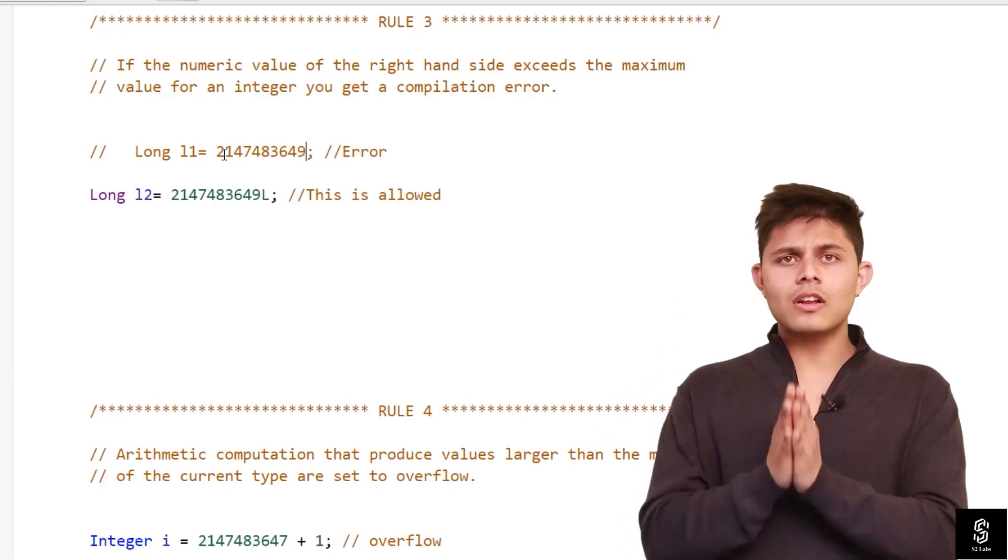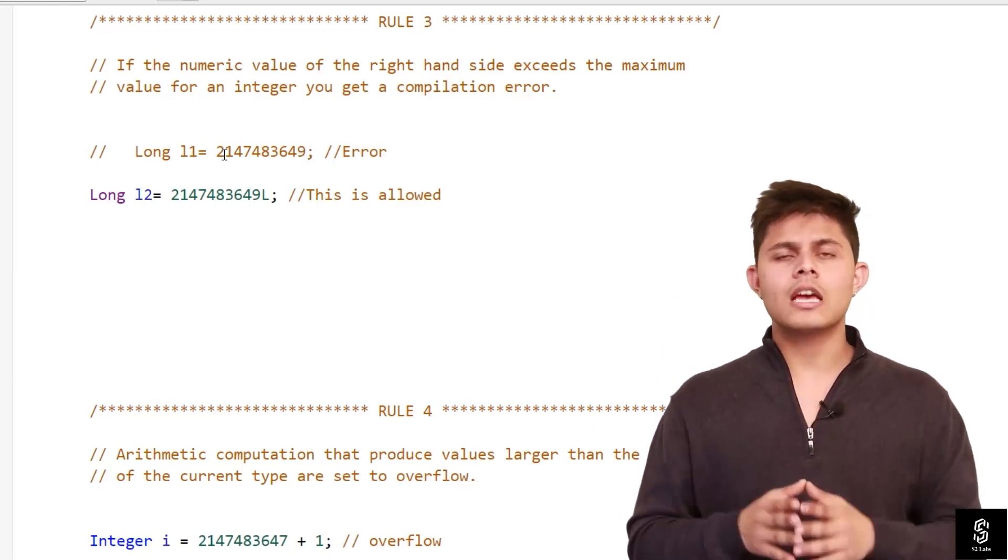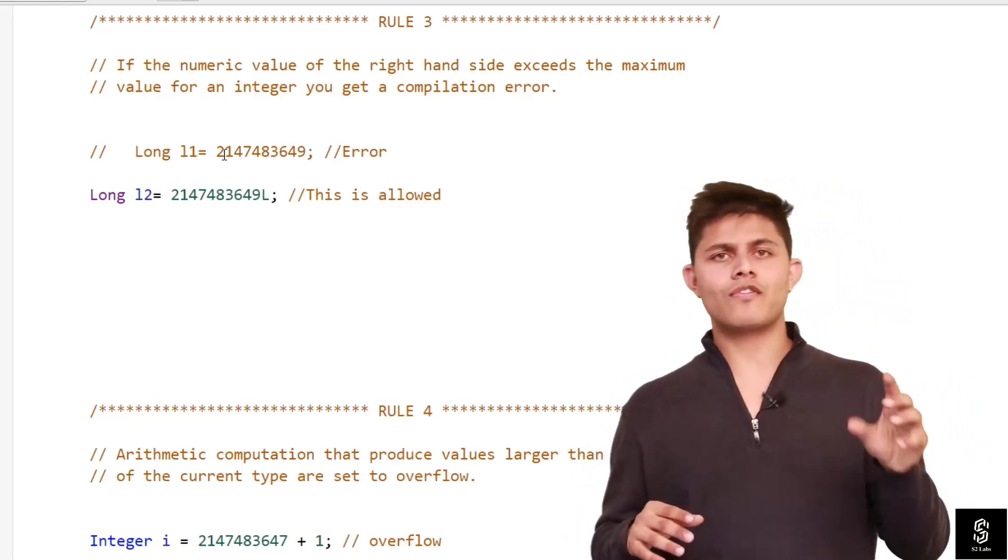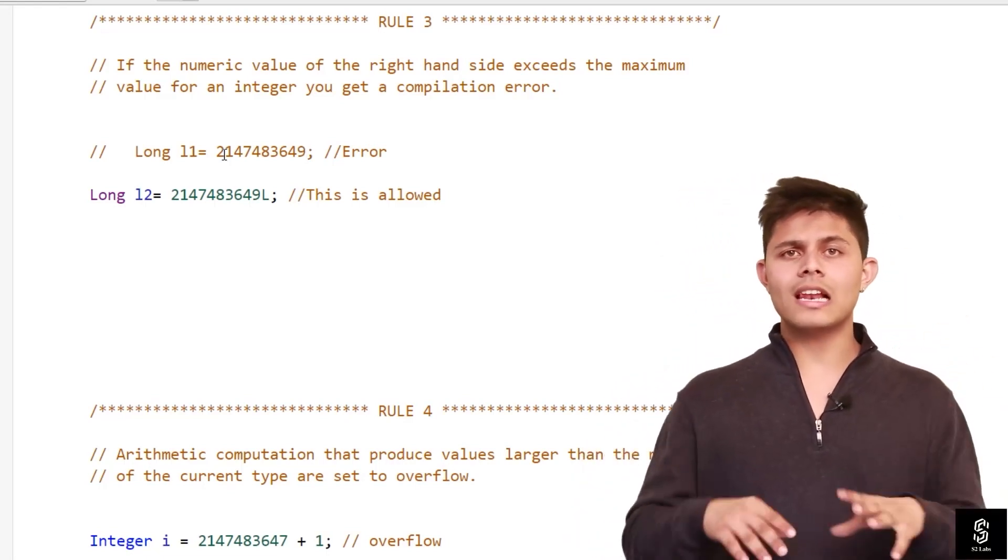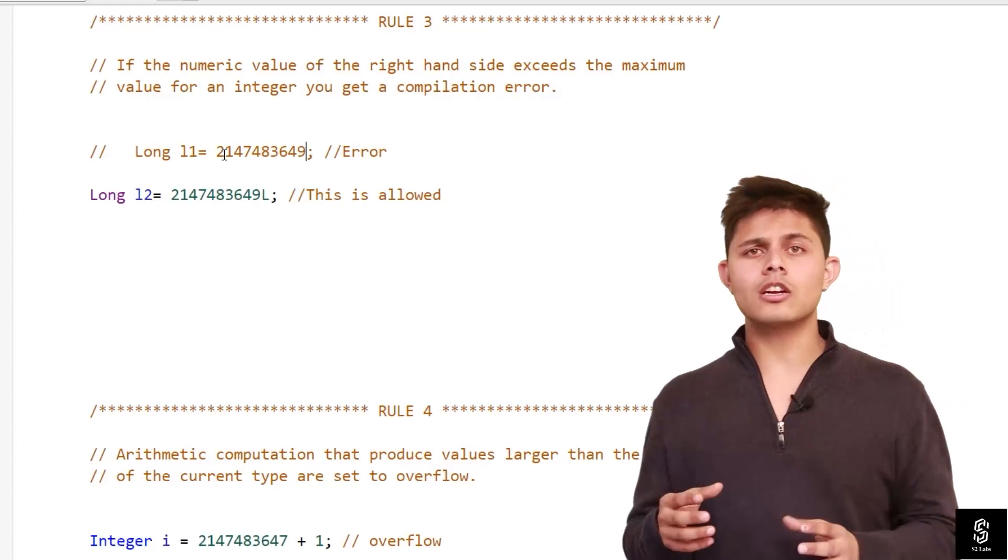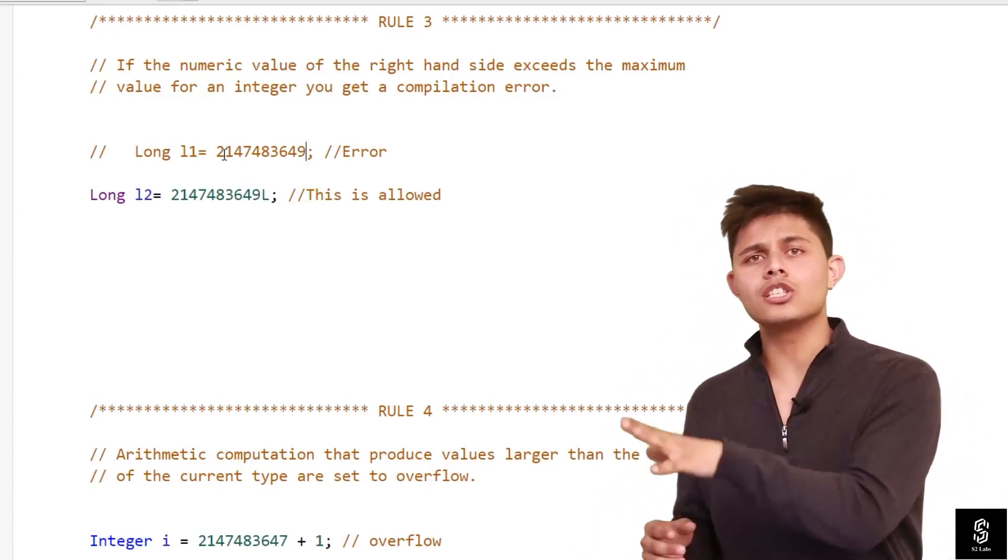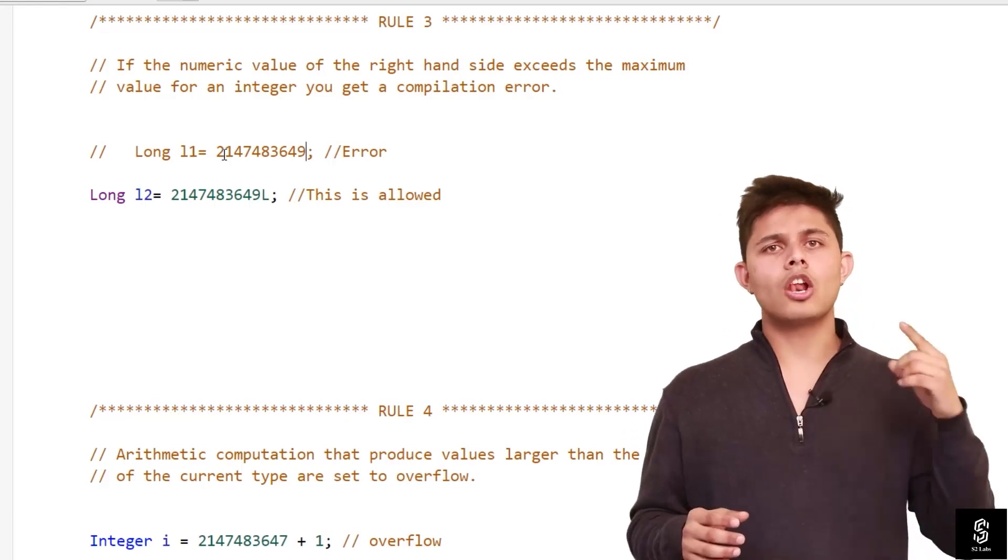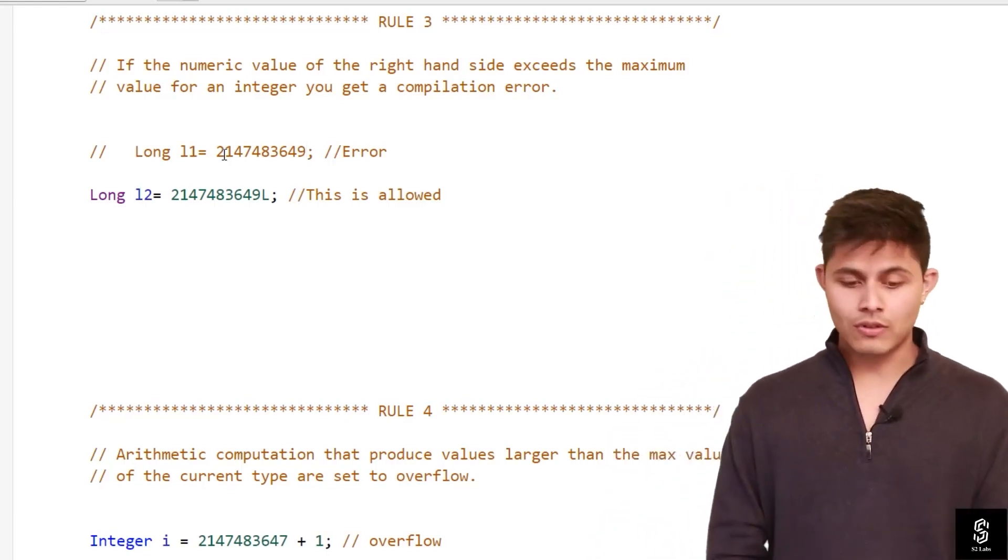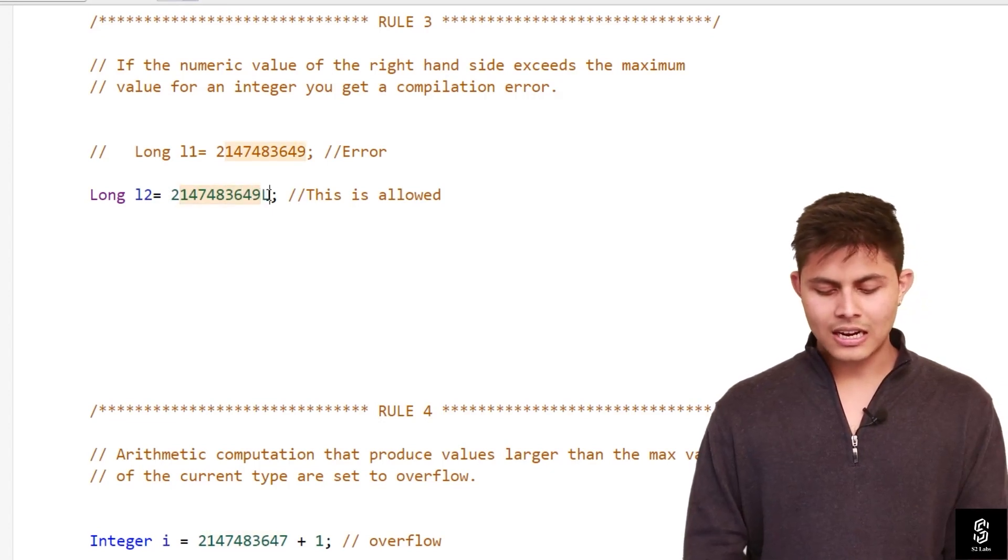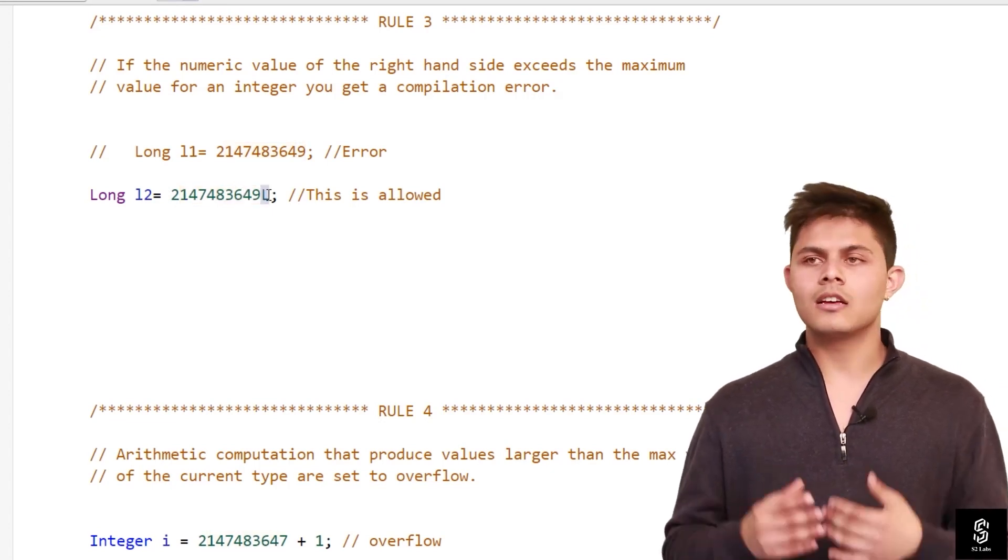Here there is no decimal, so it is considering this literal as an integer, but it is exceeding the range of an integer, so it will give a compile time error. In order to solve that compile time error, we need to explicitly specify capital L or small l at the end of this particular literal in order to notify the compiler that it is not an integer value but it is a long value. That's exactly what we are doing in line 2: 2147483649 and at the end we have appended L, which is allowed.